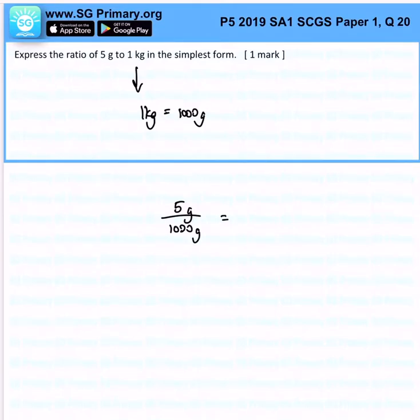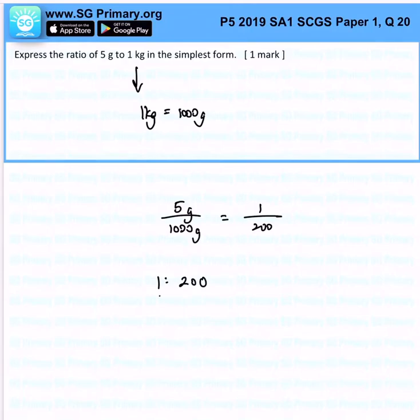Remember it's in ratio. We know there's 1 over 200. So therefore, the ratio is 1 to 200. That's the answer for this question. Thank you.